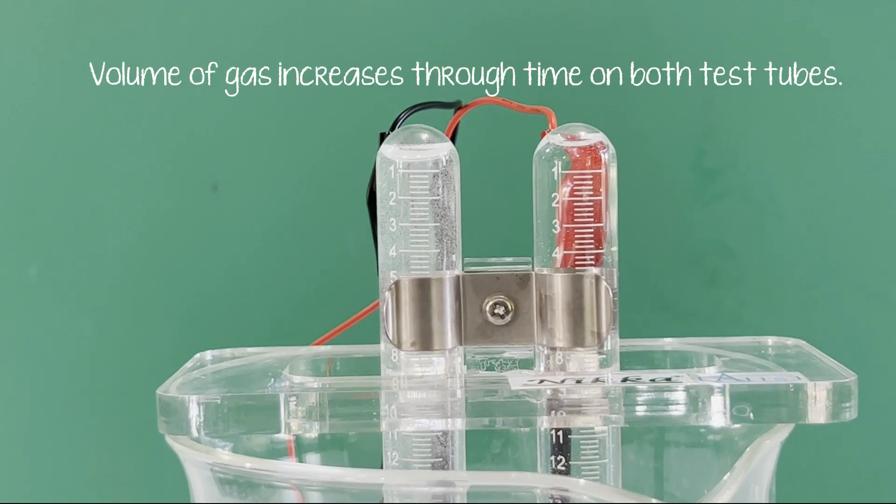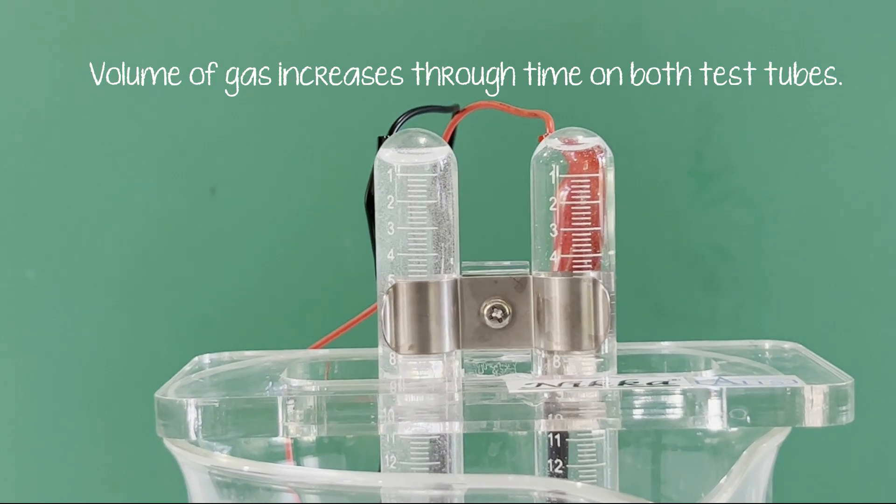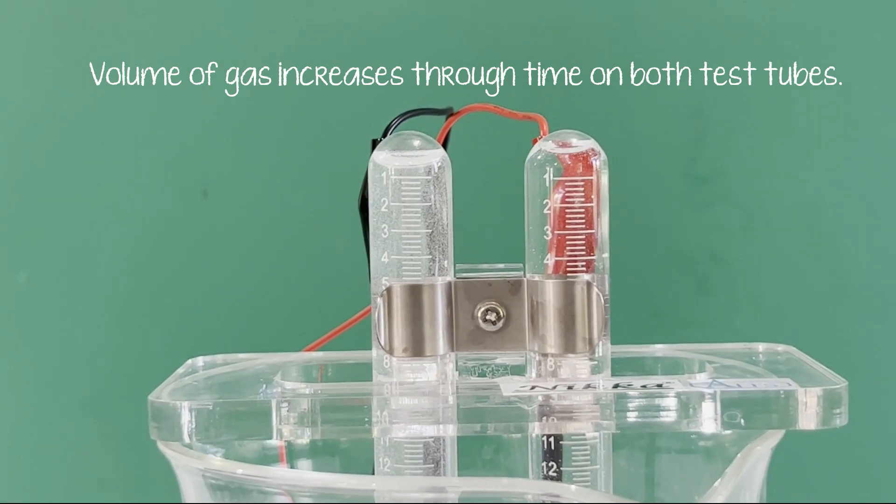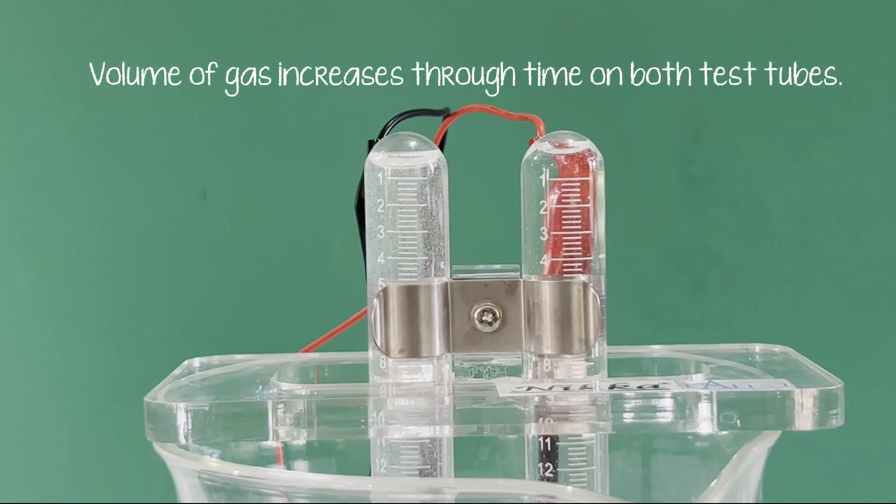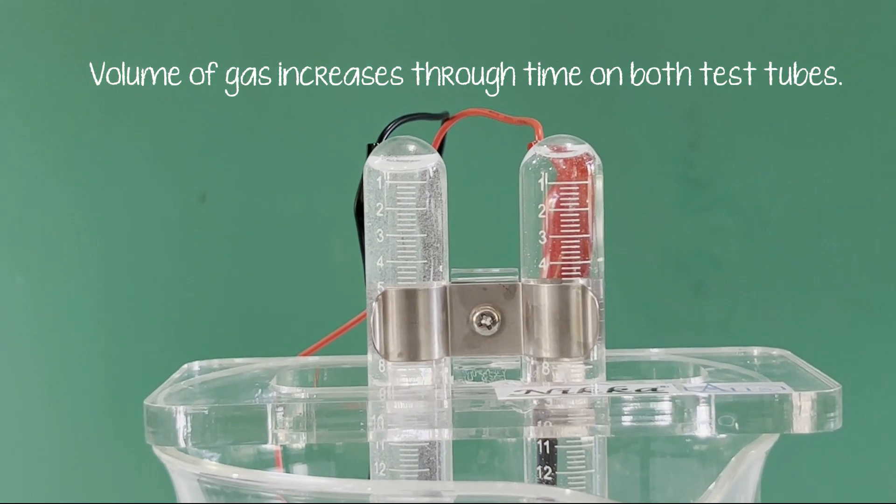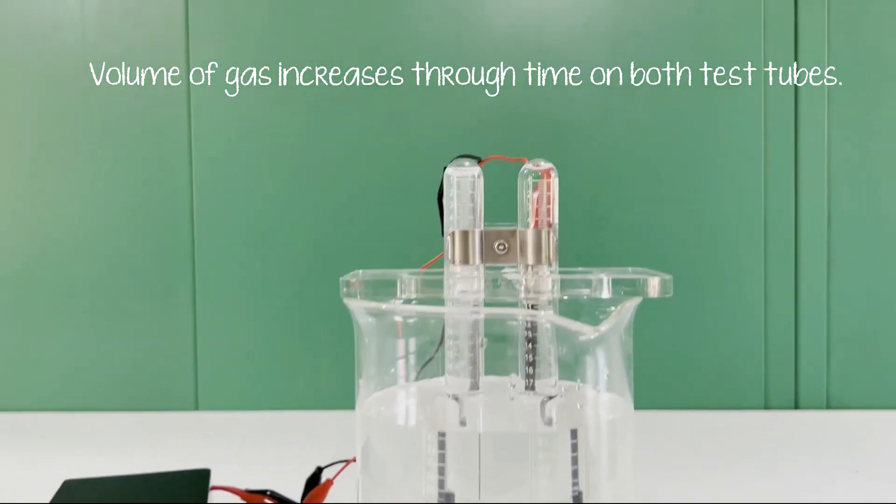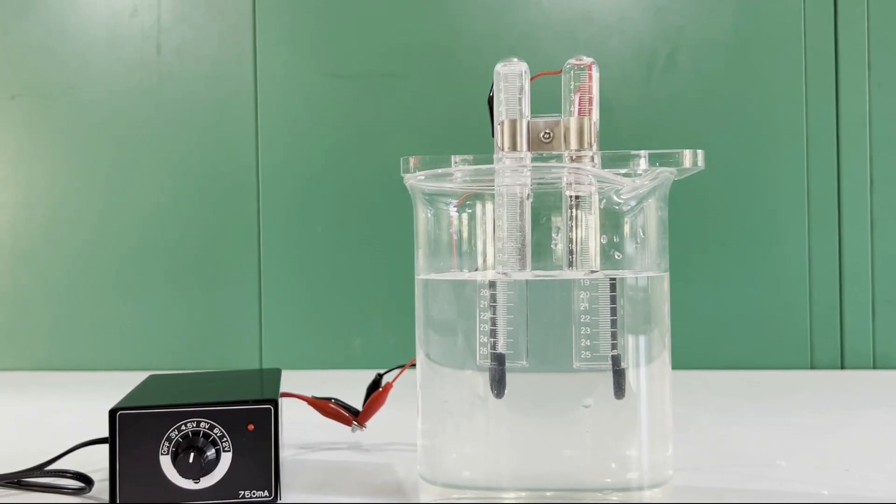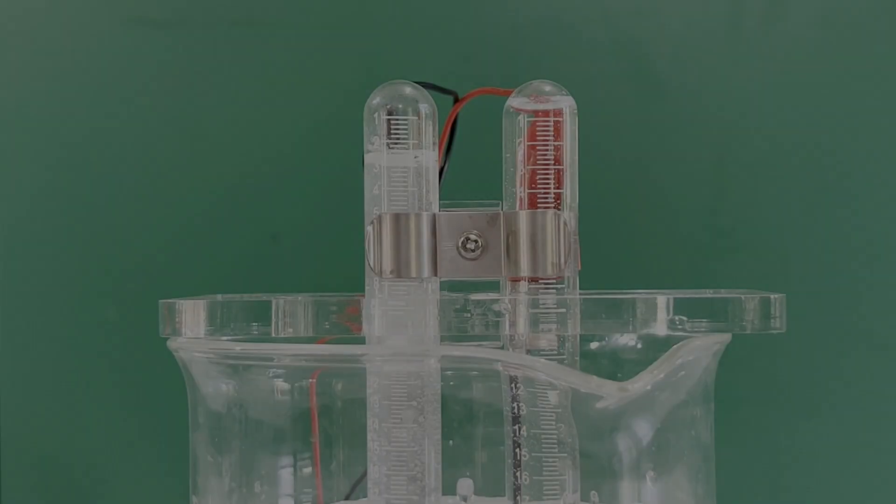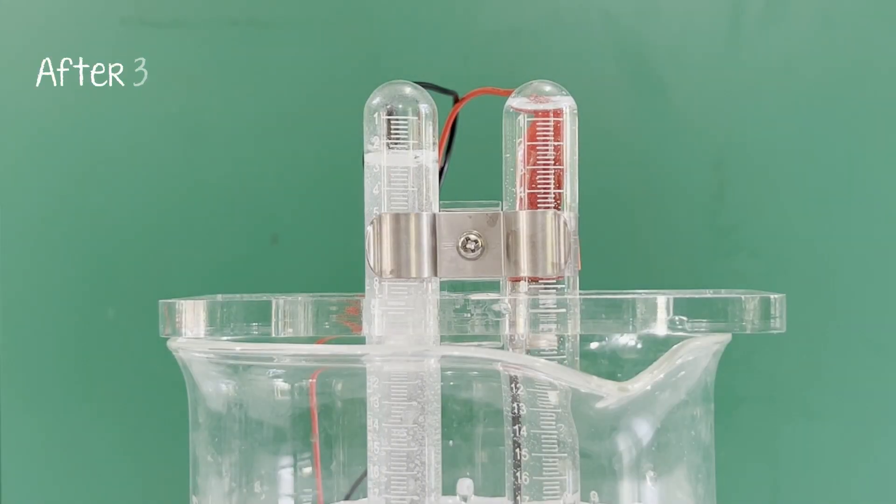The volume of gas increases through time on both test tubes. Here we have the setup after 30 minutes and we can see that there is now a significant change in the volume of gas on the left side connected to the cathode.